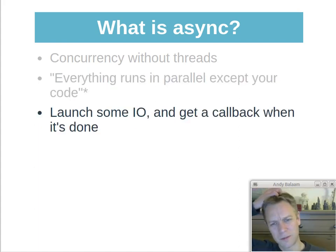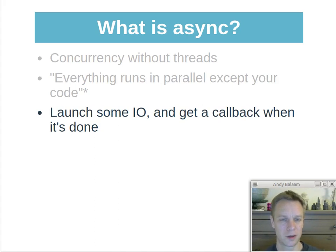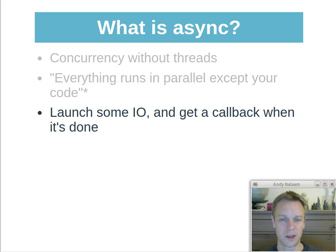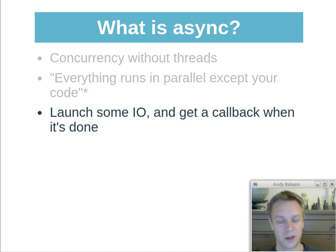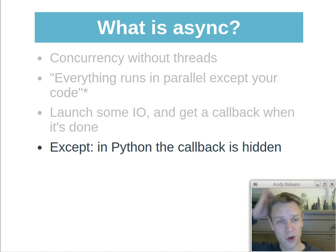Here's the main picture of how asynchronous programming looks in most programming environments. You launch some kind of IO — input/output — something like loading a file from disk, which takes massively longer than just executing code. While you're waiting for stuff from disk or over the internet, the computer has plenty of time to run other threads. The normal way of doing this is: once the thing your code is waiting for is ready, you get a callback — one of your functions gets called by the system with the results. In Python, that callback is kind of hidden, so it doesn't look like you're getting a callback, but in a way you really are.